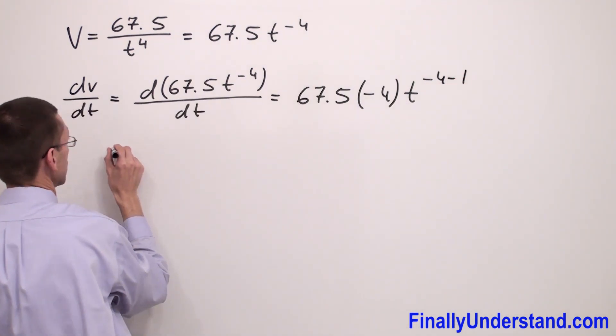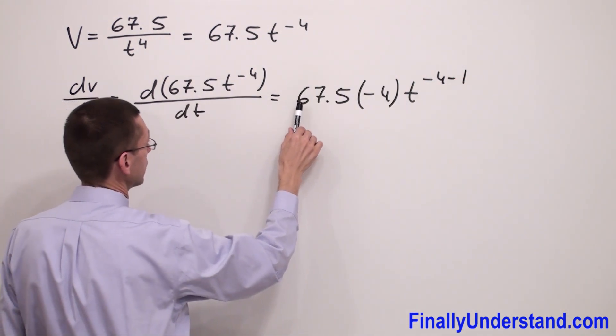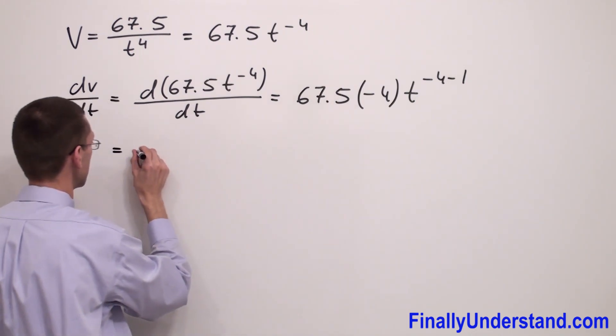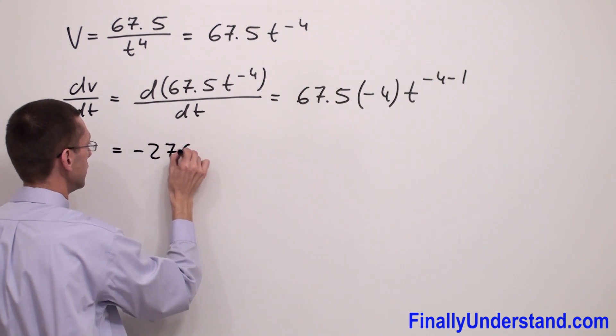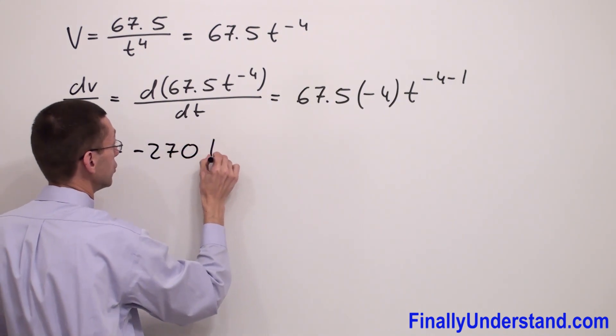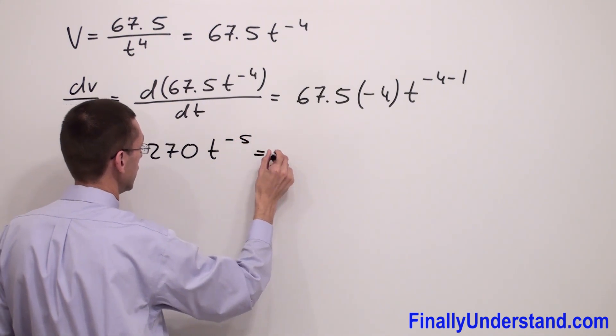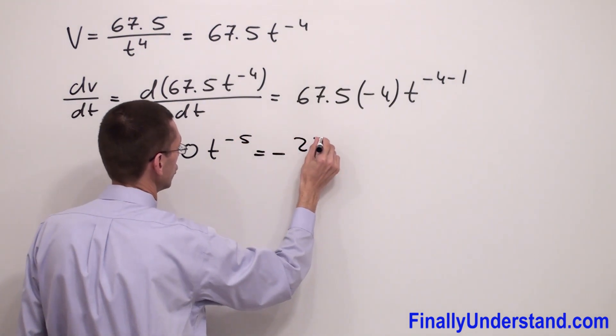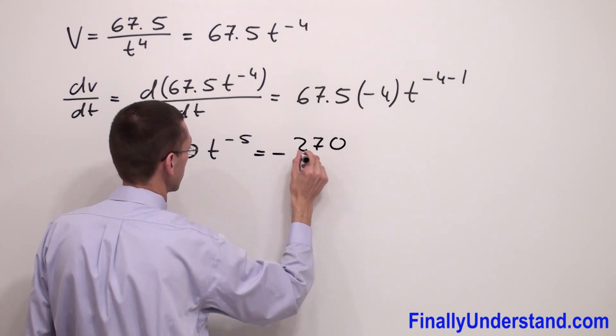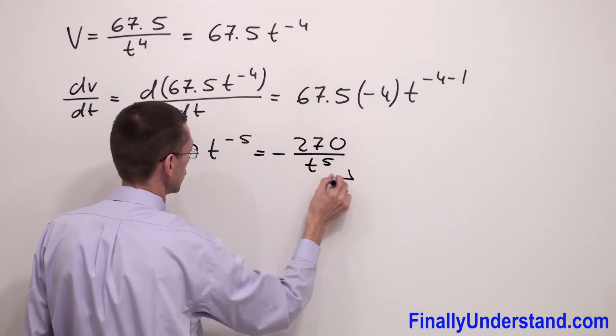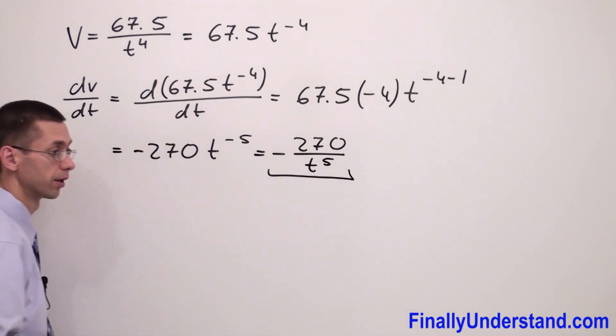So this equals 67.5 times negative 4, which is negative 270 t to the power negative 5. So this equals negative 270 over t to the fifth power. And this is the solution to my problem.